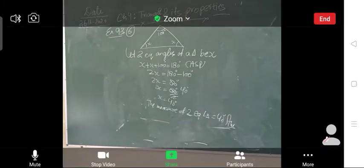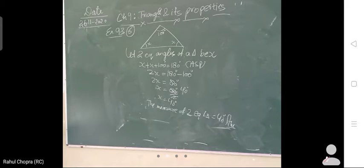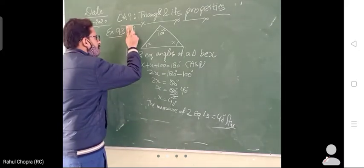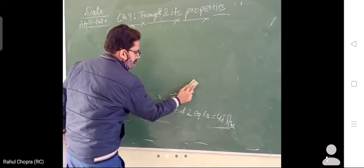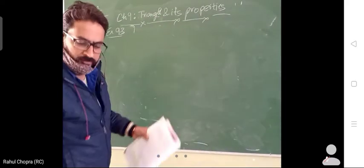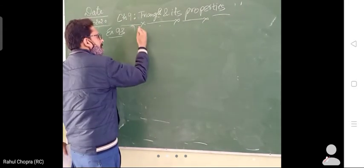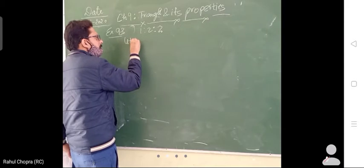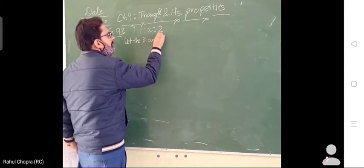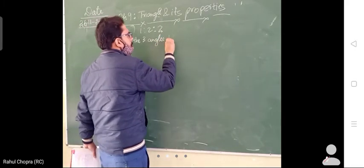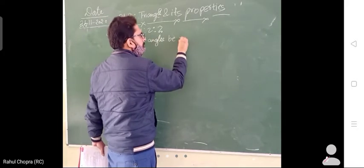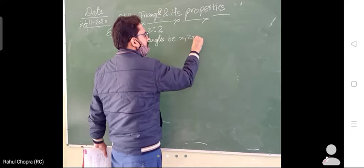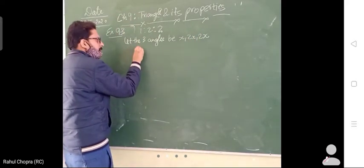Now I'll explain question number 7. Question number 7 is very important — the ratio of the three angles is given as 1 is to 2 is to 2. So we will suppose: let the three angles be X, 2X, and 2X.